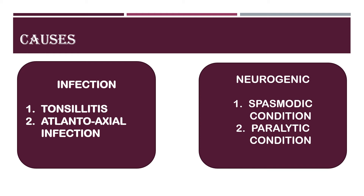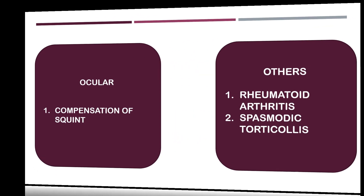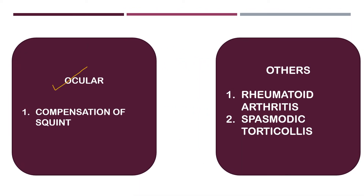Atlantoaxial infection can also present with torticollis as a symptom. Coming to neurogenic causes, any spasm - such as spasm of the sternocleidomastoid muscle - or paralysis of the muscle can lead to torticollis. Other causes include ocular compensation for squint, rheumatoid arthritis of the cervical spine, and spasmodic torticollis.